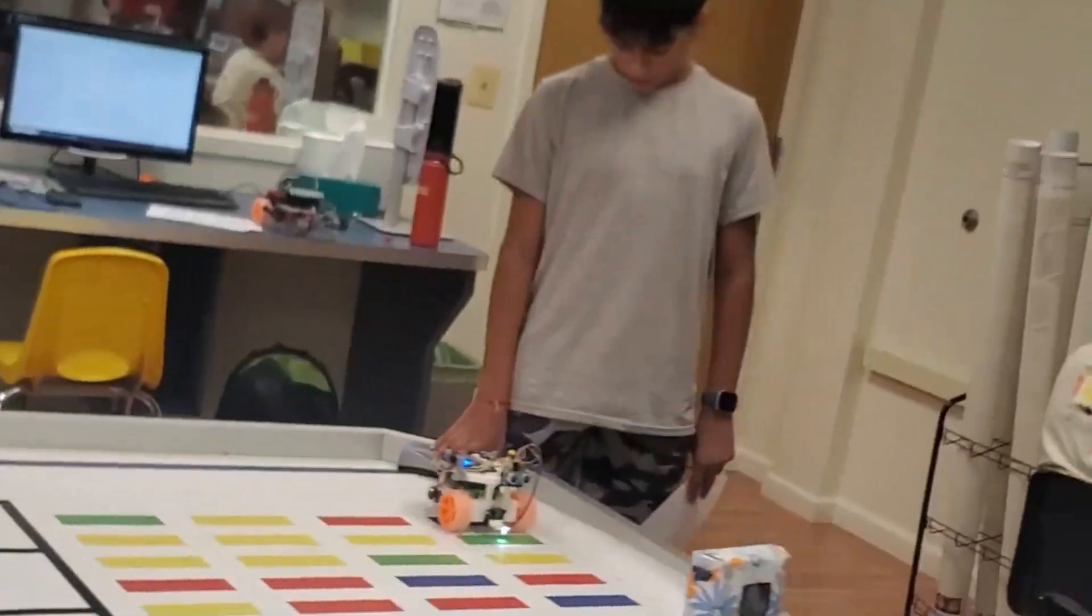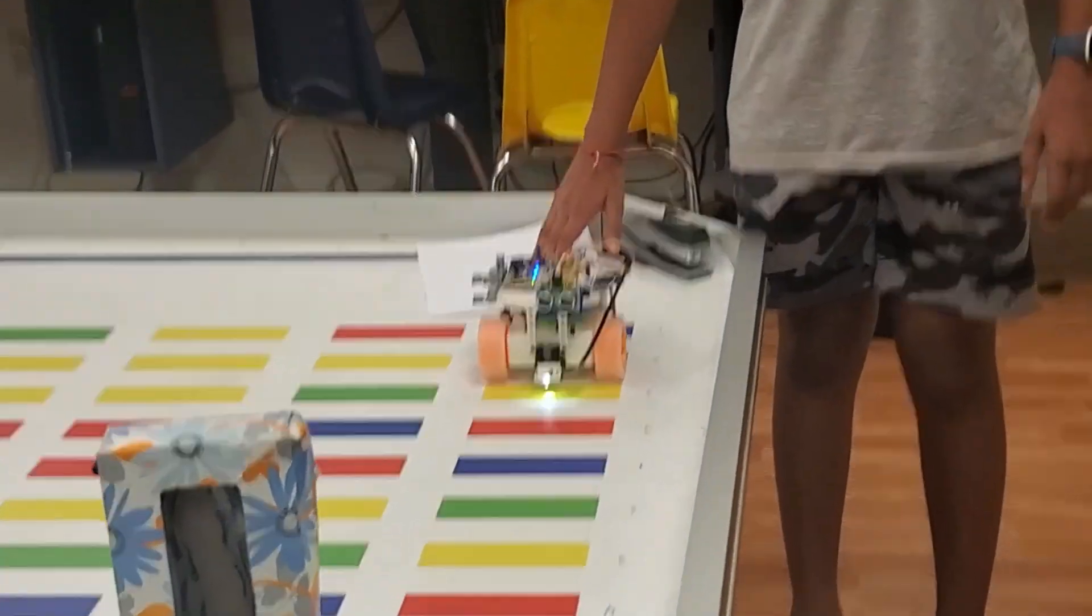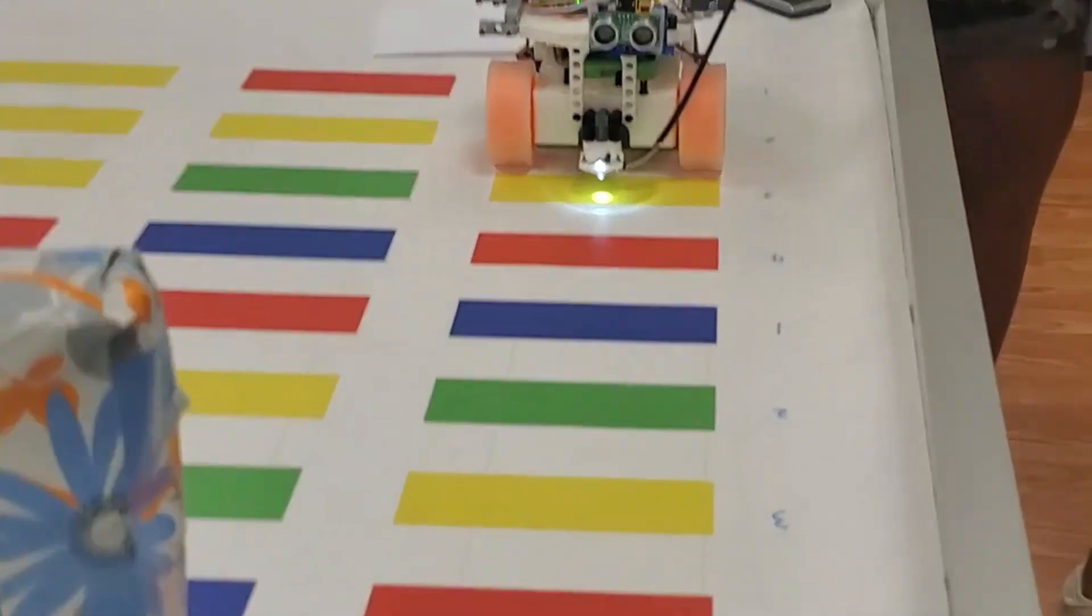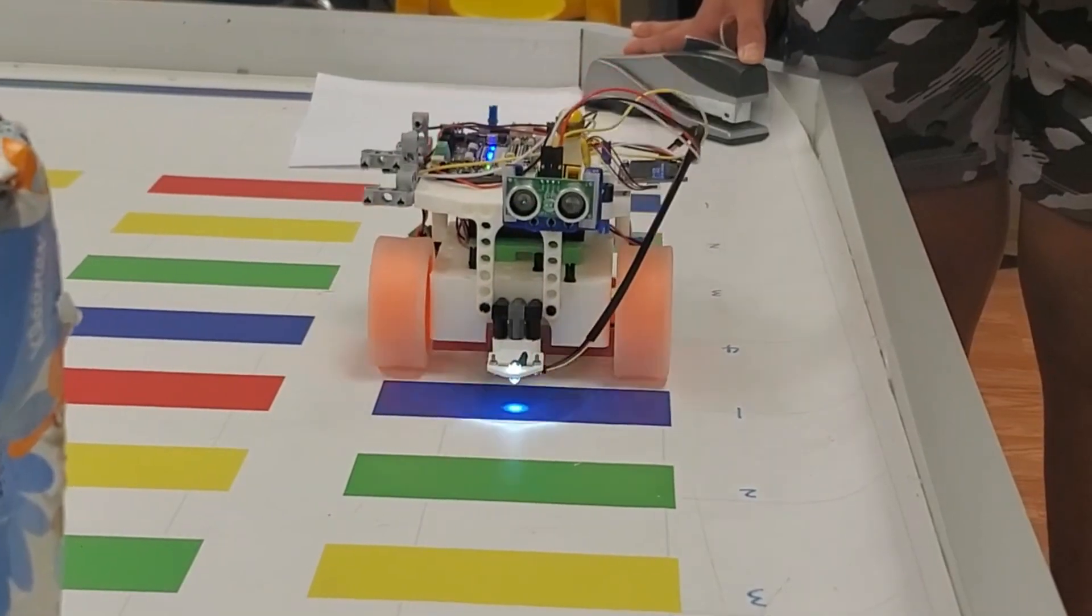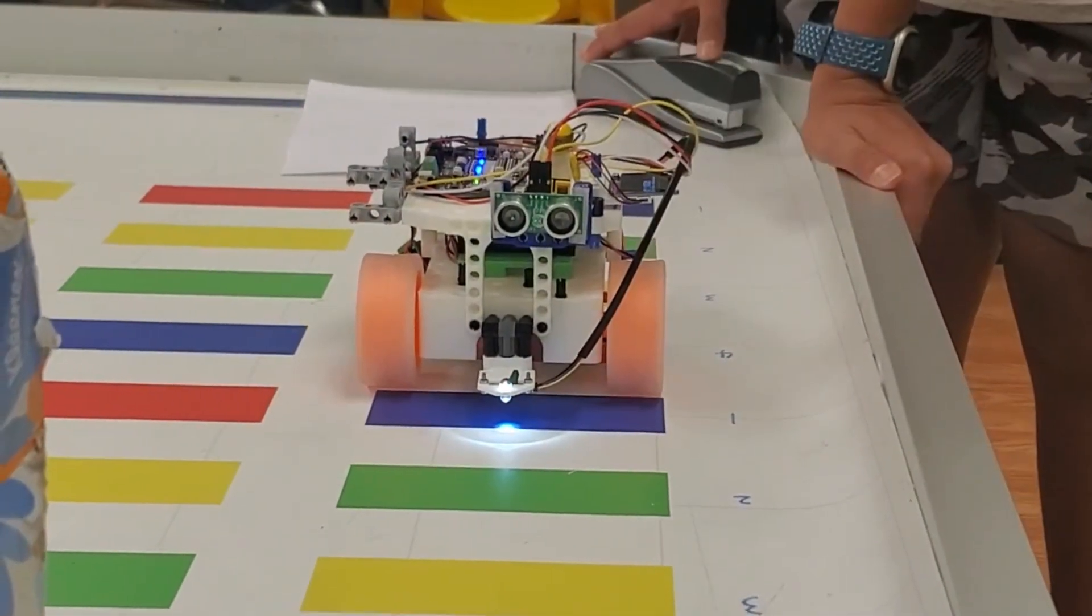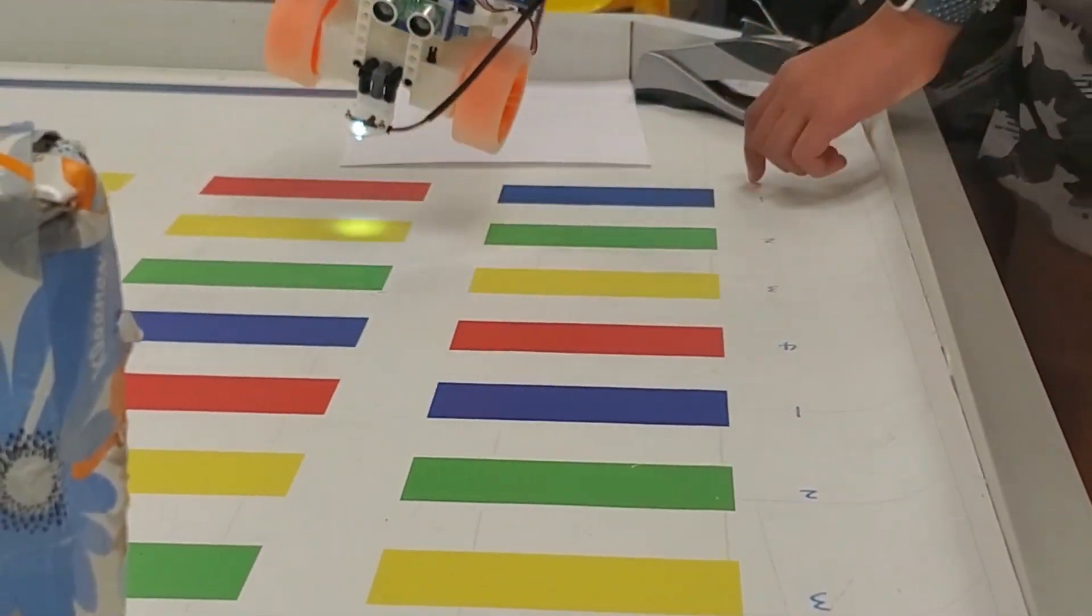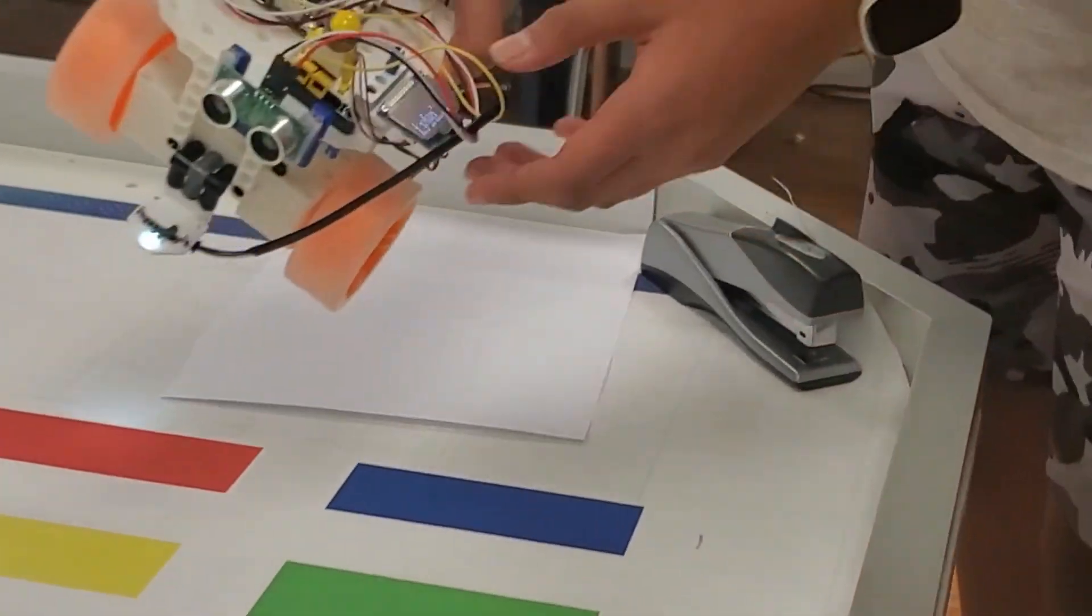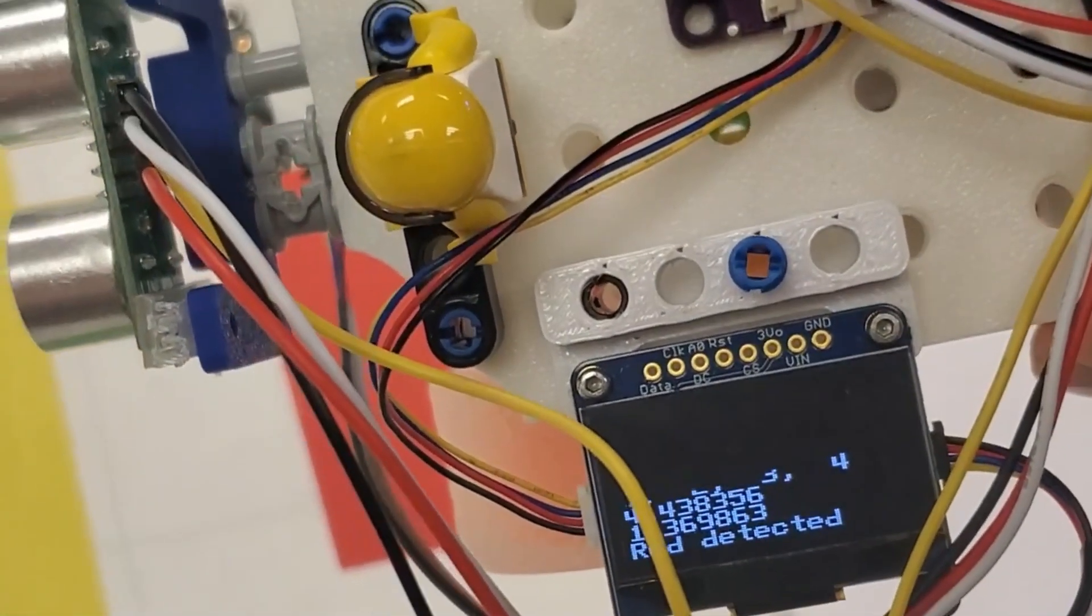Here's how it works. And then after it reads that, it displays what the colors are on the OLED. So it's blue first, then green, then yellow, then red.